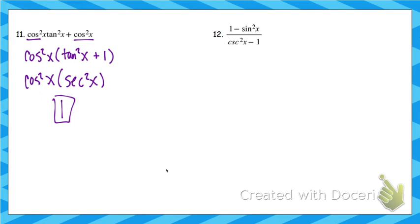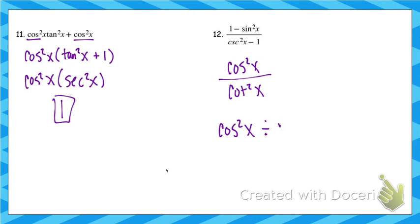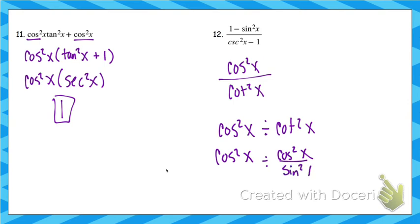Number 12 is all about those Pythagorean identities. 1 minus sine squared is cosine squared. Cosecant squared minus 1 is cotangent squared. So we rewrite it as cosine squared divided by cotangent squared. Put cotangent in terms of sines and cosines — cotangent is cosine over sine. When we divide fractions, we flip our second. Now the cosines cancel out, and you're left with sine squared.